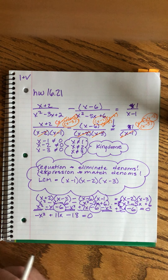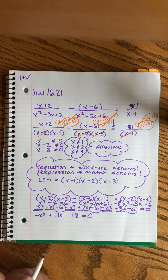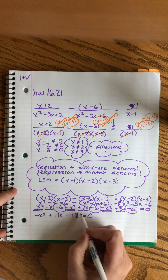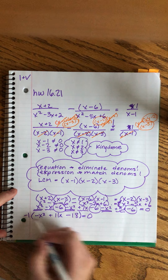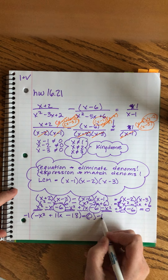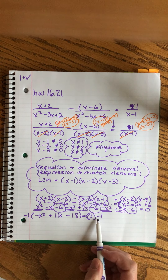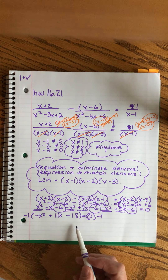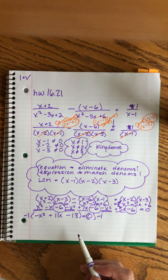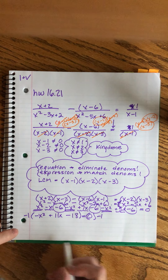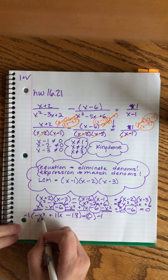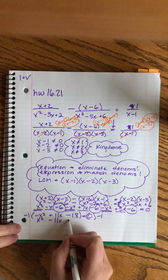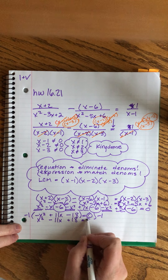I don't like the minus sign in front of the x², so I'm going to multiply everything by minus 1 — that is perfectly legitimate. Even though this is zero and zero times minus 1 is zero — that used to bother me, but it is fine. All these signs will change: x² − 11x + 18 = 0.